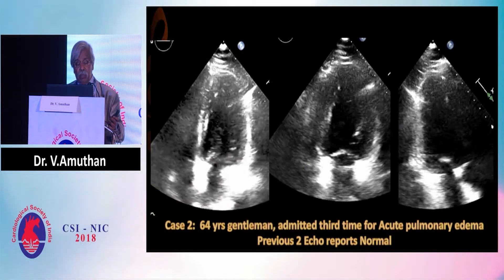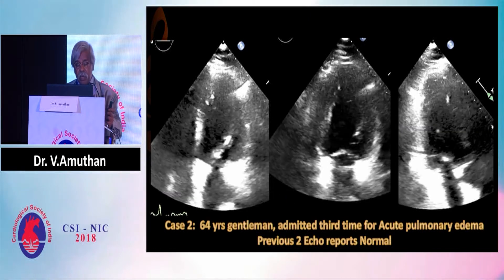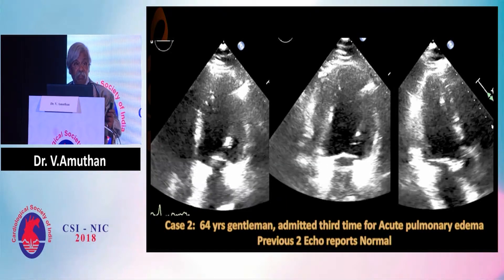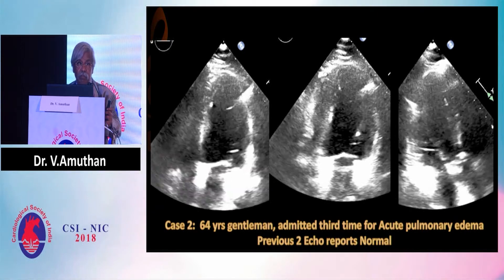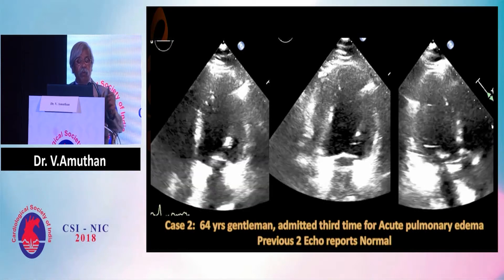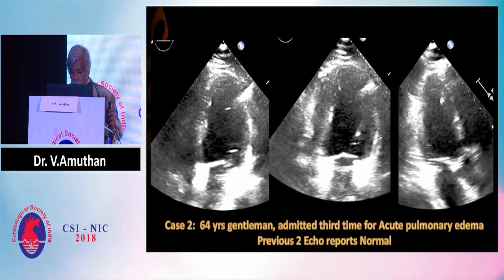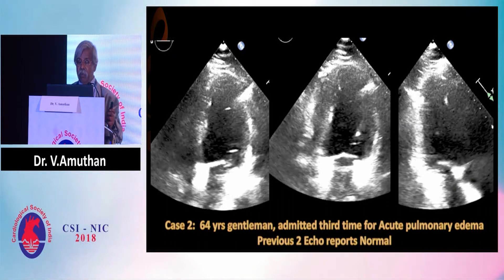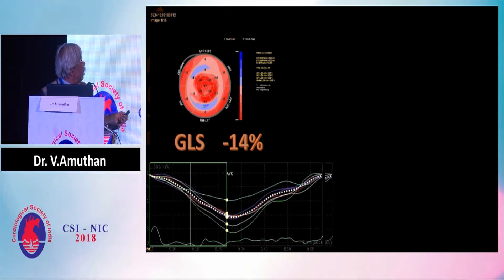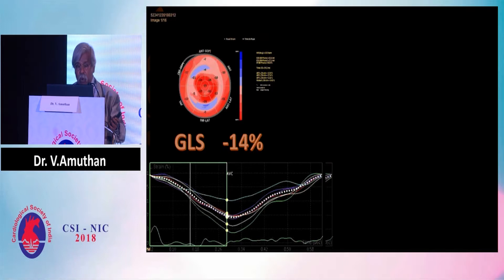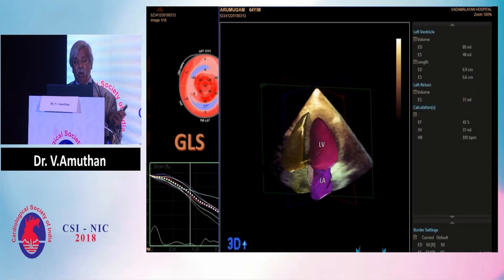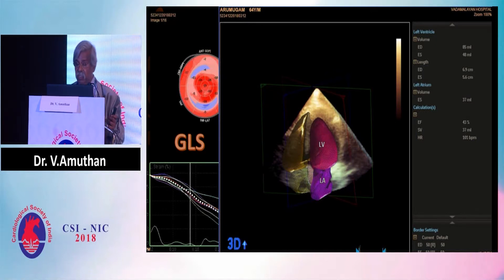This is another case — a 64-year-old gentleman who was admitted three times for acute pulmonary edema. Every time echo was done and reported as normal, because the previous two reports did not use strain. This patient was then taken for strain echocardiography, where you can see strain abnormality in the whole inferior septum, anterior septum, inferior wall, inferolateral wall, and anterolateral wall. The GLS is only 14%. The 3D model showed ejection fraction as 43%, whereas by 2D eyeballing it was reported as 56–60%.